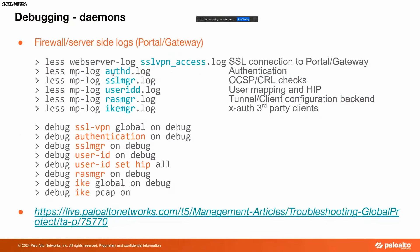AuthD is responsible for authentication, whether local authentication, SAML, LDAP, or RADIUS — all authentication-related issues, you check authD. SSL manager: if you're using OCSP or CRL to verify certificate status, this is where you will see the result of those CRL checks. For user ID, this is for user mapping and HIP reports. RAS manager is for the tunnel and client configuration when you're using the GP agent. IKE manager is for any third-party clients — not the GlobalProtect client or agent — if you want to see how the tunnel is being established using third-party clients, you look at IKE manager.